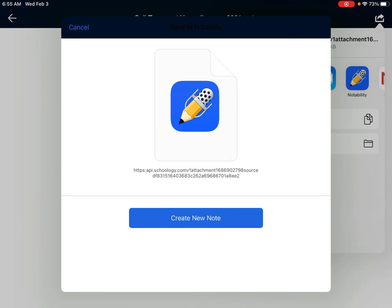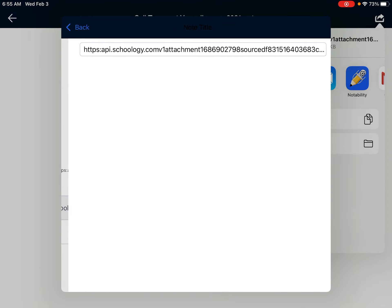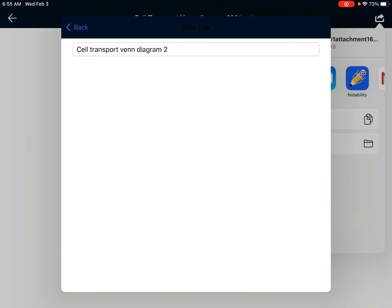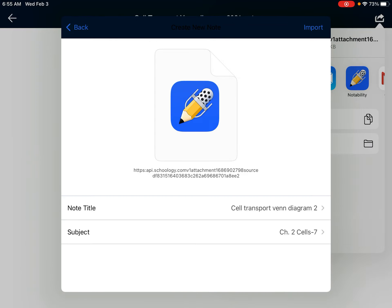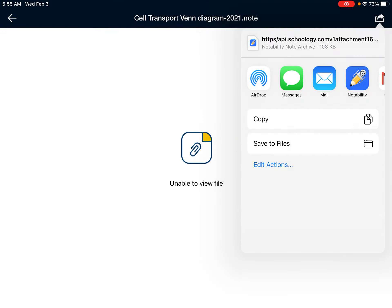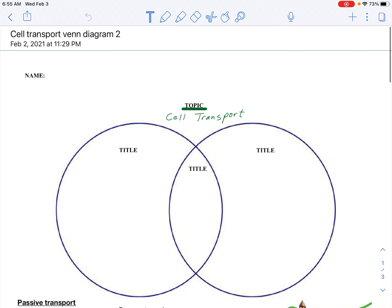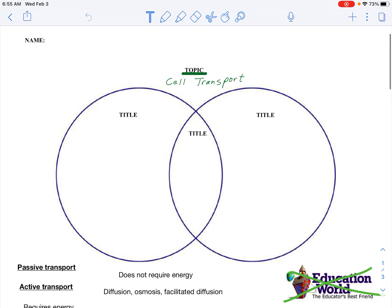Just for your sake, you need to give this a title so you're going to be able to find it later. Then once you've got that in Notability, you'll just be using the text box tool to drag and drop items into the Venn diagram. So first you need to select the text tool.